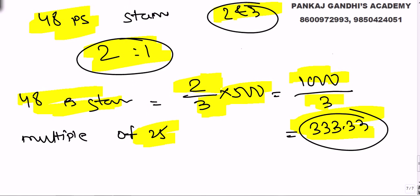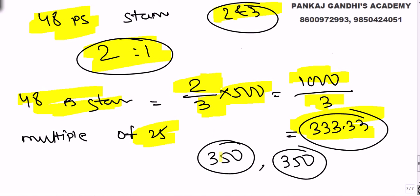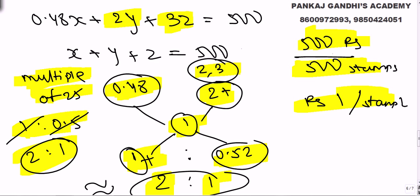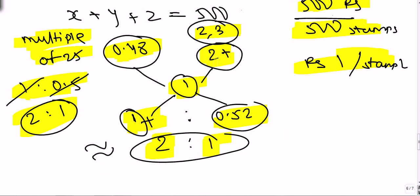Since 333 must be a multiple of 25, the nearest multiples of 25 are 325, 350, and 375. This is exactly what we found by trial and error. The allegation part: 48-paise stamps mixed with the combined average of 2 and 3 rupees gives a total of 500 stamps at 500 rupees. The ratio is approximately 2:1 but slightly more, narrowing us down to 350 and 375.